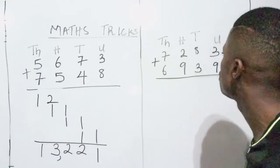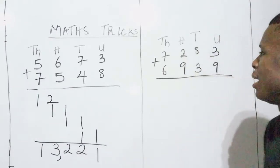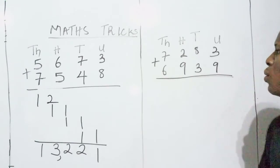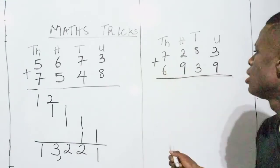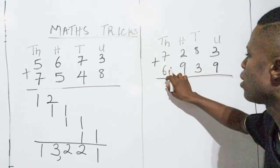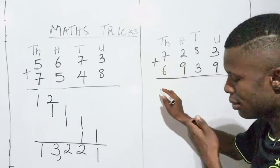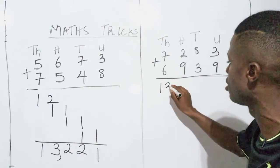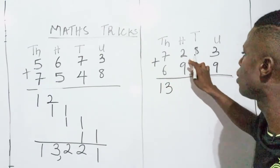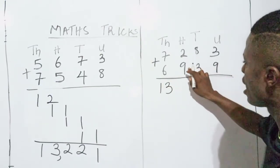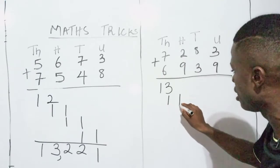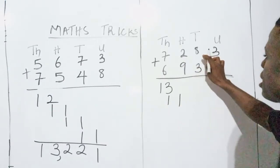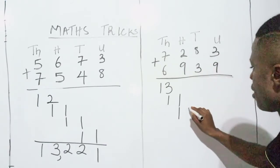If we have 7,283 and we are told to add 6,939. So we start with the 1,000. So at this point, you can see 7 plus 6 is what? 7 plus 6 is 13. And 2 plus 9 is 11. I have to write 11. Then 8 plus 3 is still 11. I have to write 11.